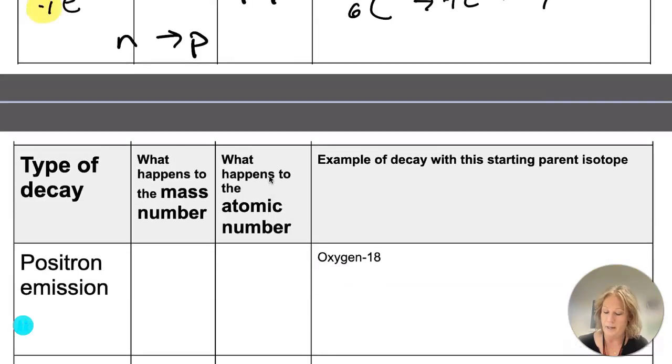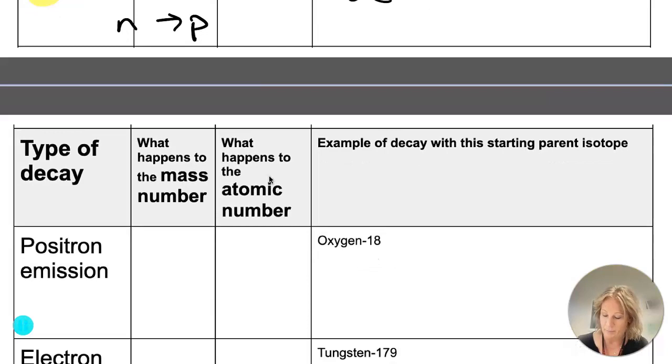Positron emission is the opposite of beta, so now you're going to have a proton turning into a neutron, so mass number will stay the same, atomic number will decrease by 1.